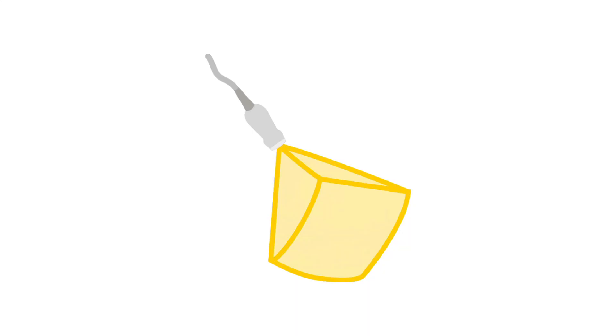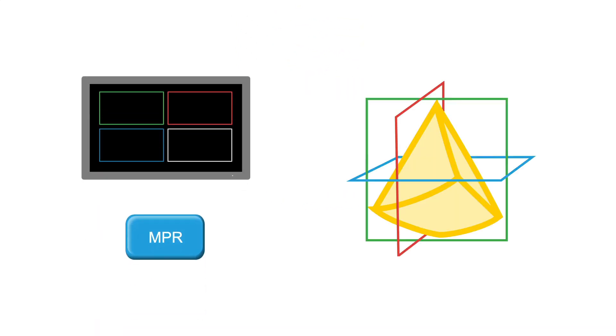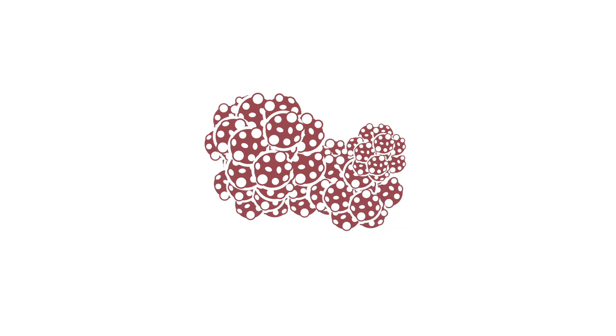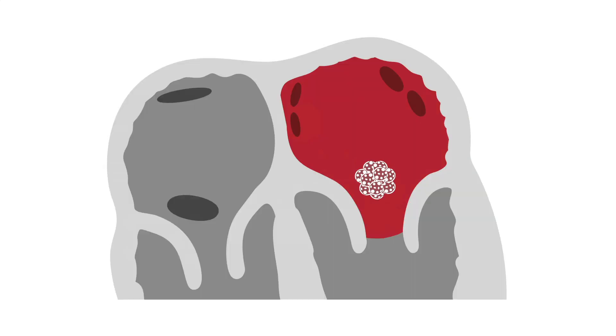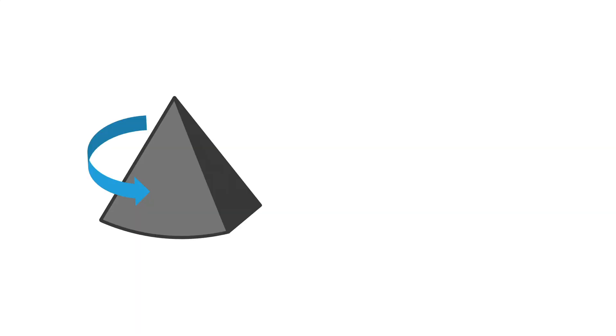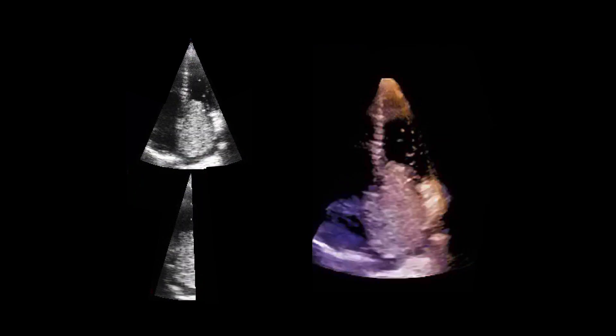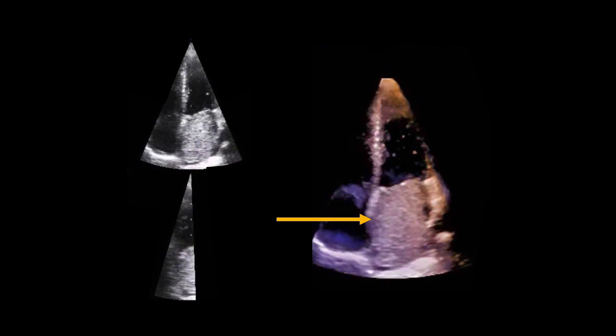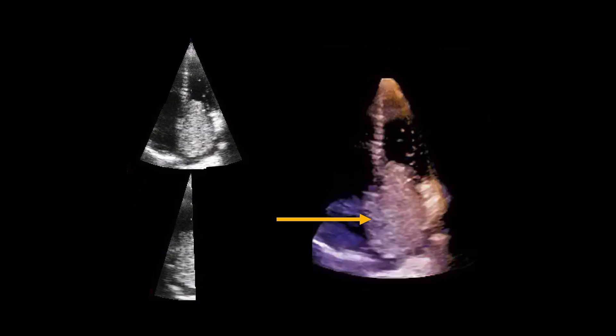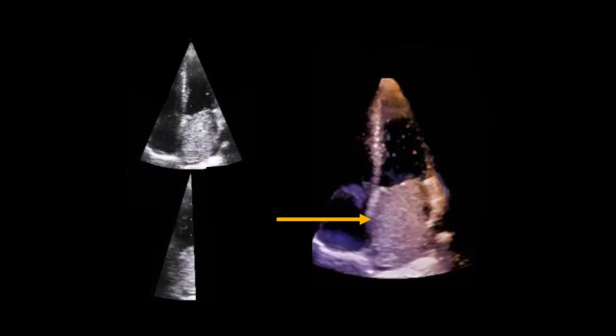3D echo, multiplanar reconstruction and volume rendering allow appreciation of the mass size, shape, and insertion of the septal, inferior, and inferior lateral left atrial walls. Proper rotation and cropping allow the assessment of mass size, shape, and relationship with surrounding structures. On this 3D echo video, you can see septal insertion, which is key in discriminating left atrial myxoma from other masses.